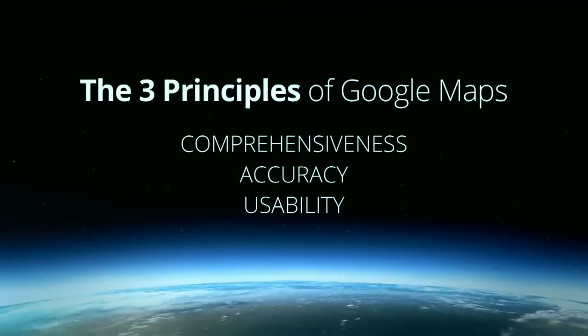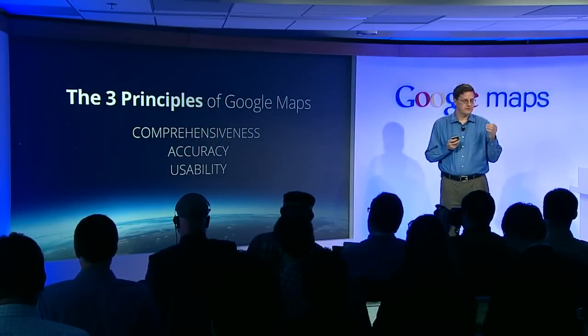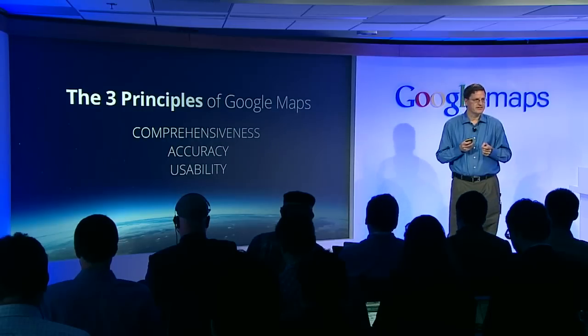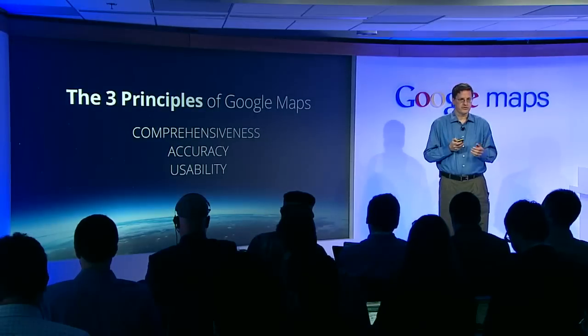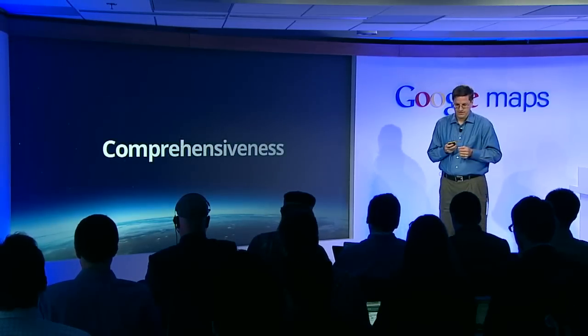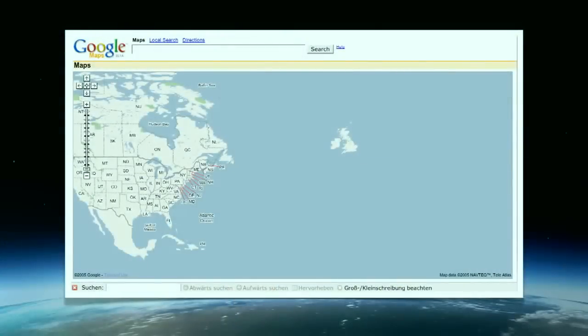Now I'd like to talk about how these apply to all of Google Maps. We've learned a lot in the last seven years, and the focus we've had on comprehensiveness, accuracy, and usability describes all of the work that we do on Google Maps. Google has always had an obsession with comprehensiveness. While they were crawling more and more of the web, we were trying to map more and more of the world. However, that first launch of Google Maps in 2005 actually looked like this — there's something wrong with this map.